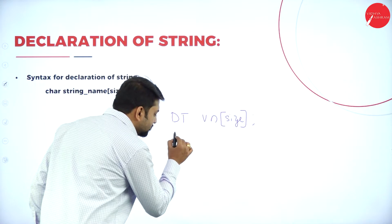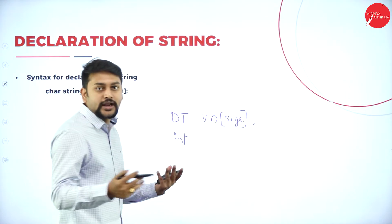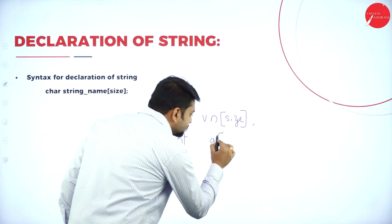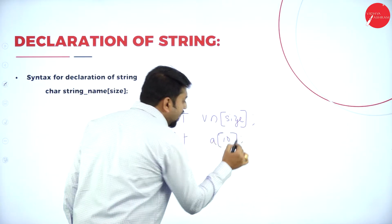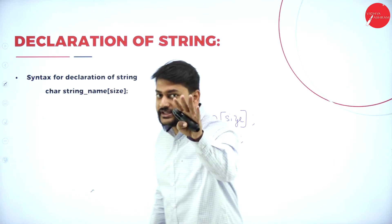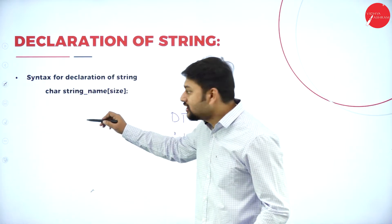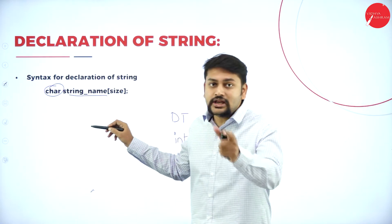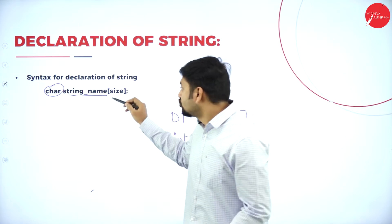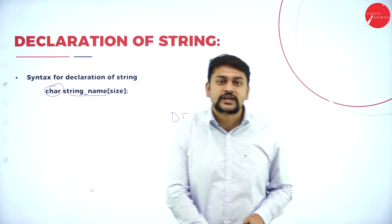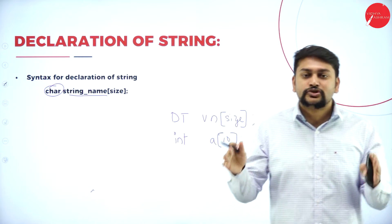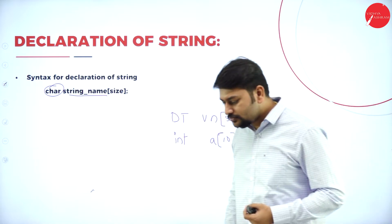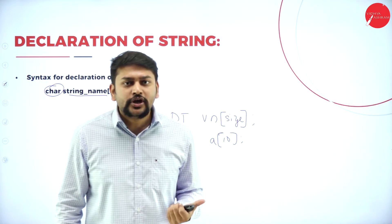Let me show you one example. The data type is int, the variable name is 'a', and the size of the array is 10. Now observe the string declaration: 'char' is the data type, 'string_name' is the array name, and I use square brackets with the size inside. The key thing to notice is that I have taken char as the data type.